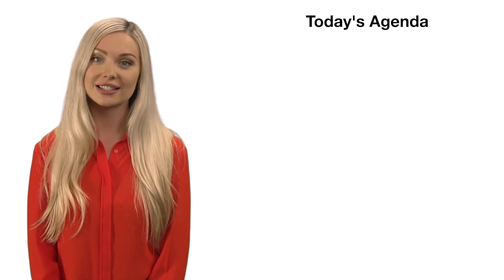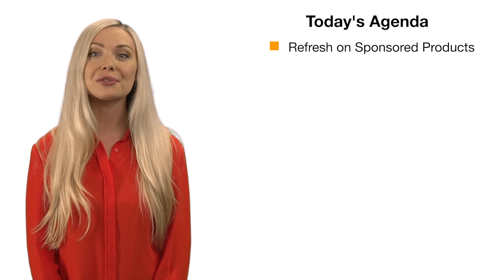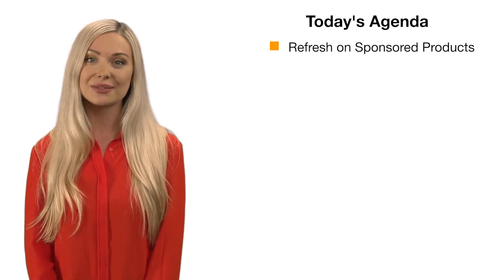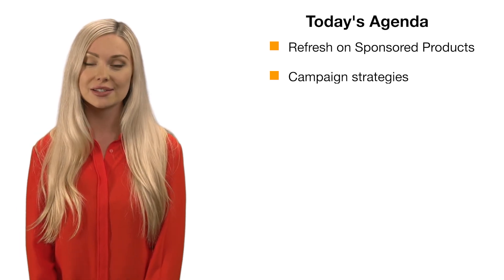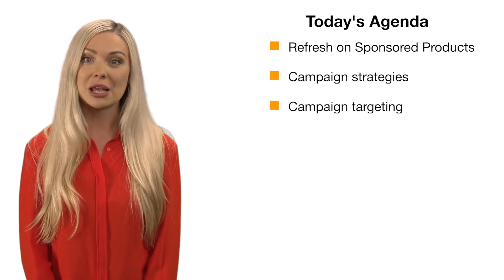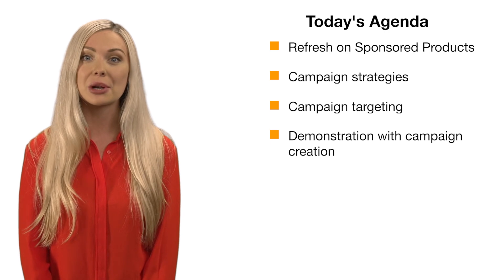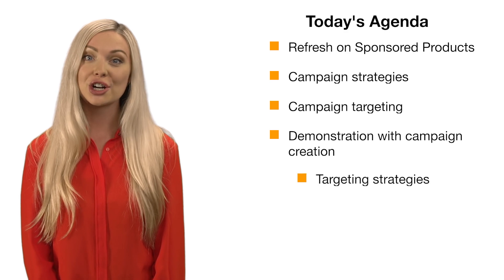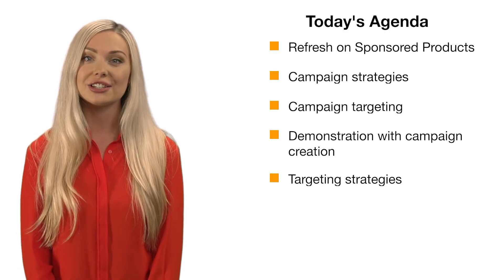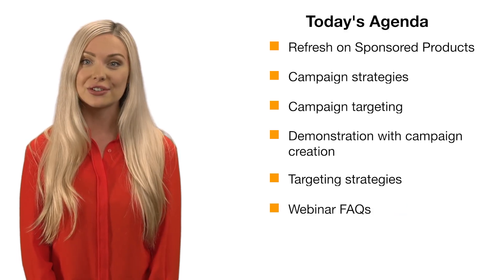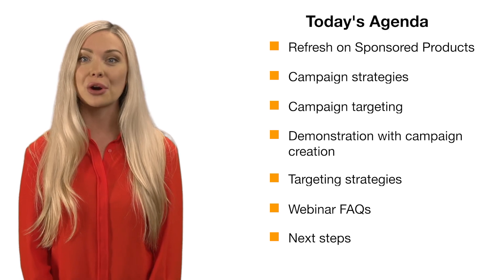Our webinar today is scheduled to last about 35 minutes. I will cover the following topics: a refresh on sponsored products, placements, and its place in your Amazon business; campaign strategies — various strategies available with sponsored products; campaign targeting — why use manual targeting with automatic targeting; a demonstration with campaign creation using learnings from an automatic campaign; targeting strategies using advanced features; webinar FAQs; and next steps to continue growing your brand on Amazon.